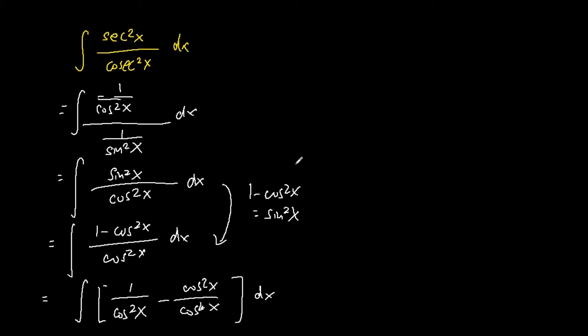And as we know, cosine square x over cosine square x is just basically equals to 1. So we have the integration of 1 over cosine square x minus 1 dx.